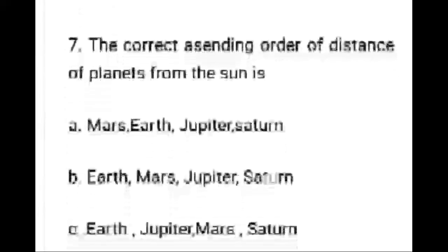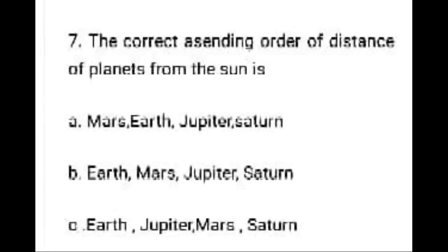Question: The correct ascending order of distance of planets from the Sun is — Option A: Mars, Earth, Jupiter, Saturn. Option B: Earth, Mars, Jupiter, Saturn. Option C: Earth, Jupiter, Mars, Saturn. The right answer is option A: Mars, Earth, Jupiter, Saturn.